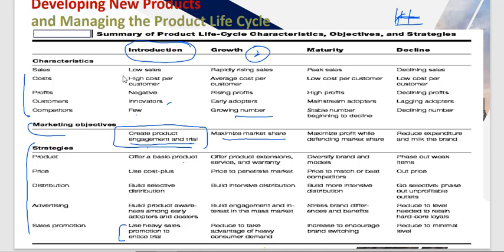In the growth phase, the objective is to maximize market share. Strategies include offering product extensions, adding services and warranties, acquiring more products, and using penetration pricing to capture more market share.